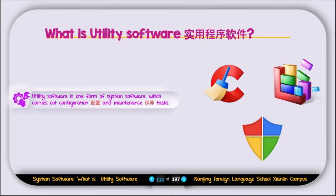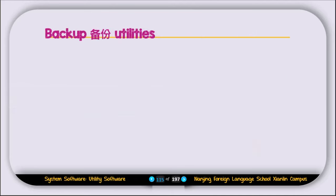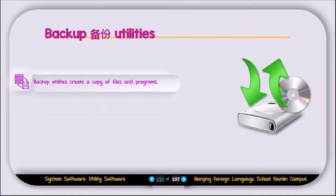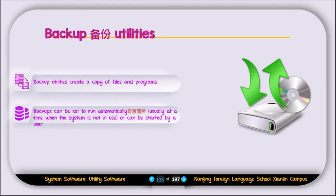Now let's discuss the first type of utility software, which is called backup utilities. Backup utilities create a copy of files and programs. The basic purpose of backup utilities is to create copies. Backups can be set to run automatically, usually at a time when the system is not in use, or can be started by the user at any time.